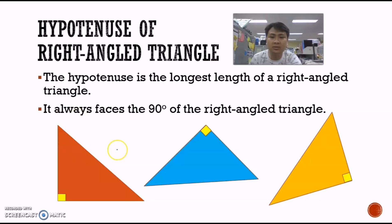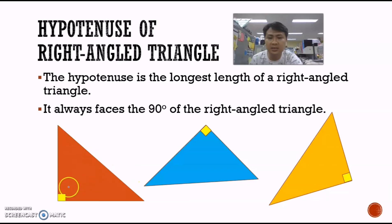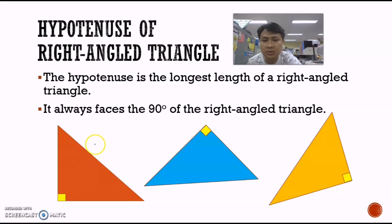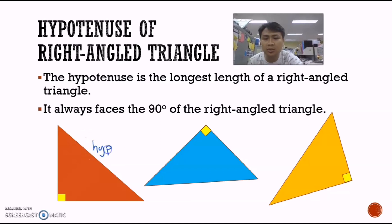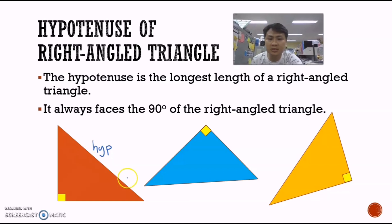If you look at the three triangles over here, for this first triangle, this length here is facing the 90 degree. So we will call this length the hypotenuse. I can mark the hypotenuse using the symbol HYP. So this length over here is called the hypotenuse of the right angle triangle.